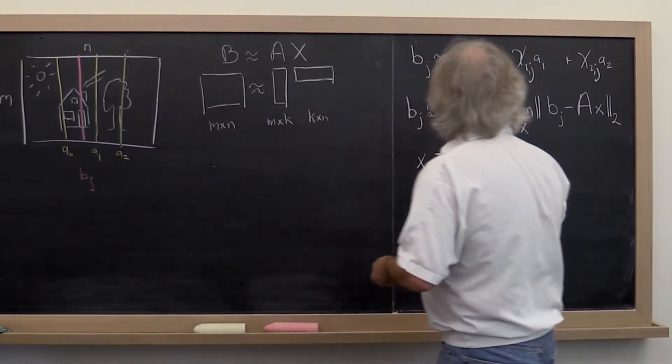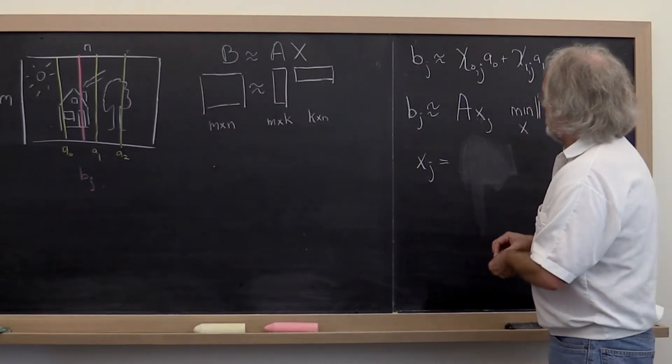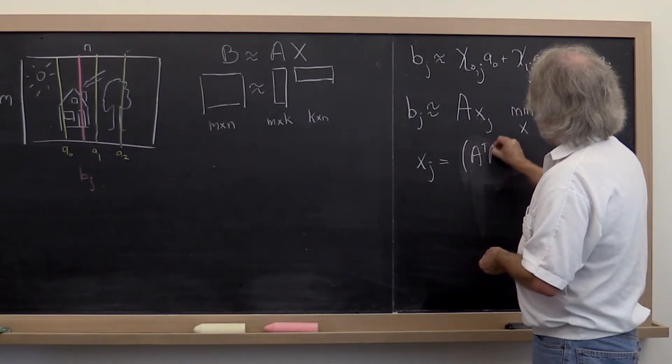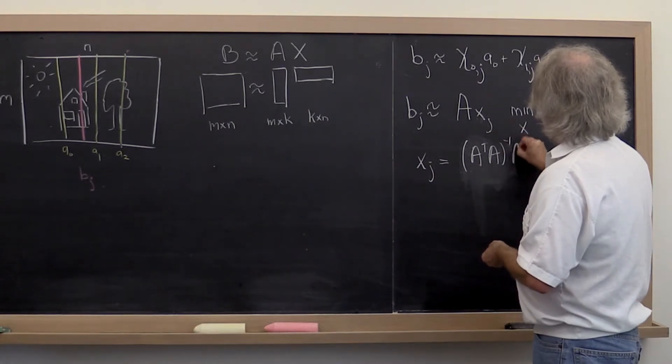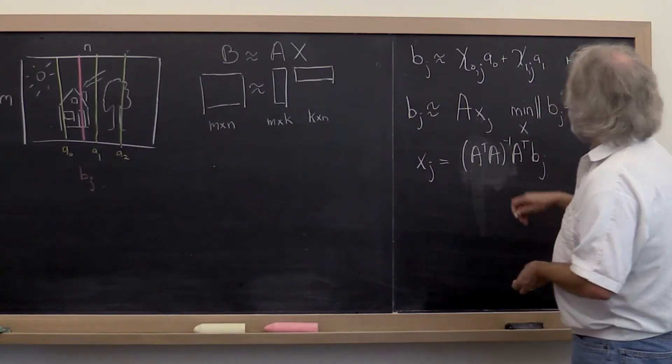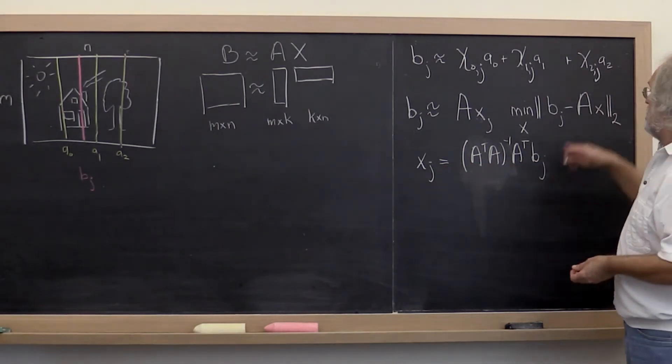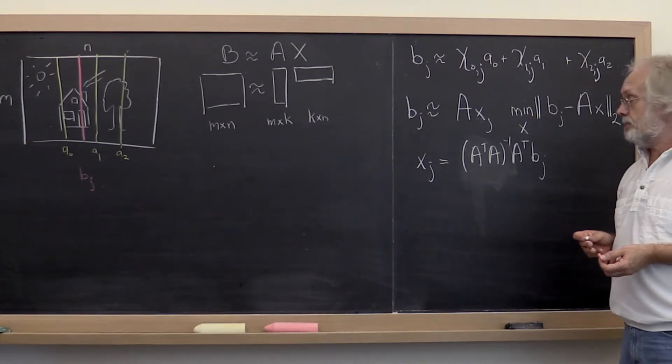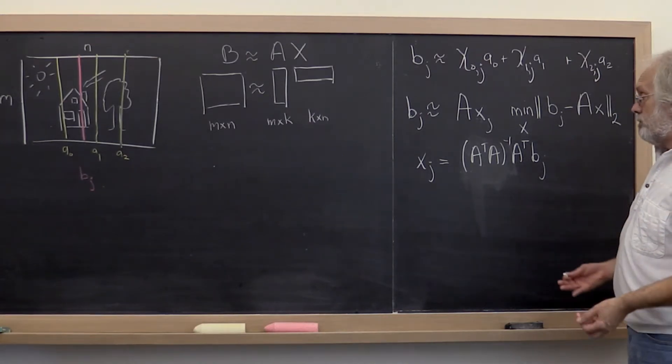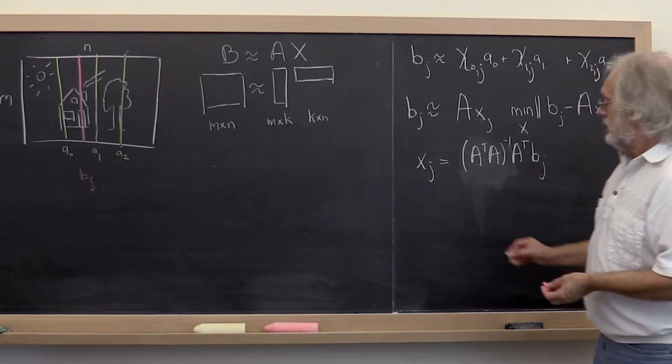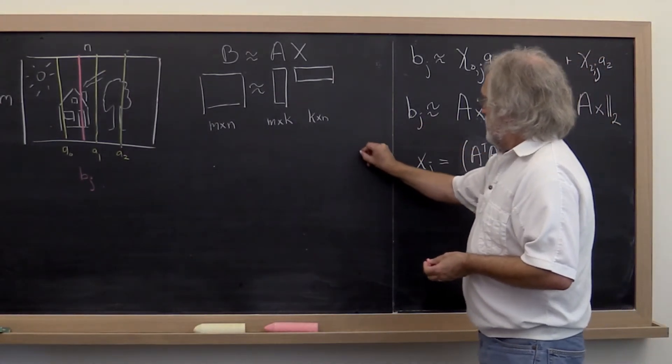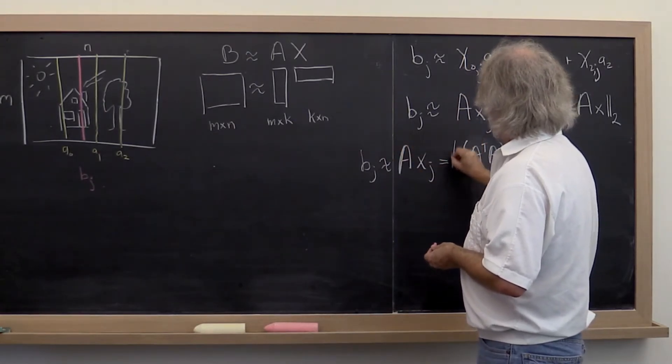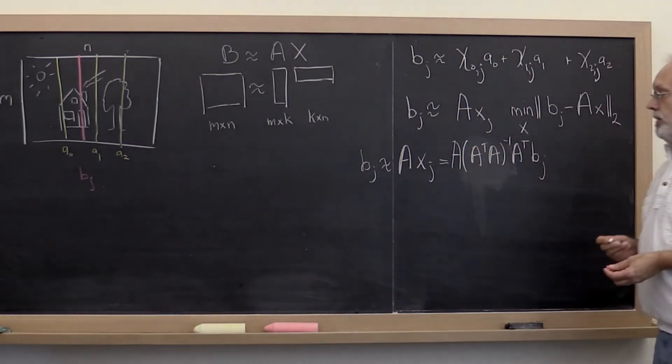Now there's something called the pseudo-inverse that takes its place. And the pseudo-inverse is given by A transpose A inverse A transpose times Bj. And you can prove that this is the best choice in the case where A has linearly independent columns. And what does that mean? Well that means that our Bj is approximately A times that vector which is given by that right there.